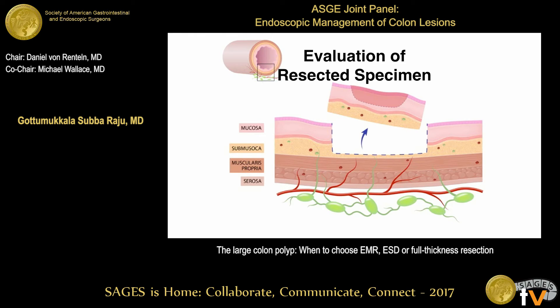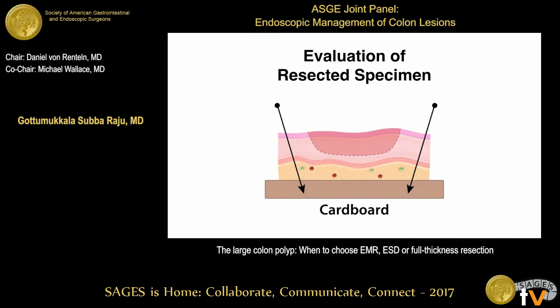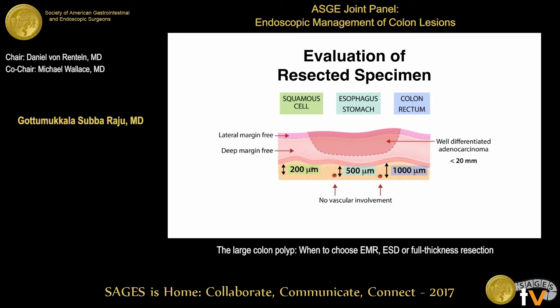As endoscopists in this country, we tend to throw the specimen into the formalin jar. But we should take time to pin the specimen to cardboard — that helps the pathologist look at the details and give a comprehensive report: whether it is a well-differentiated cancer, whether margins are negative, the depth of penetration, and whether lymphovascular invasion is present. A poorly differentiated cancer, presence of lymphovascular invasion, or margins positive or more than 1,000 micrometers — all those need to go for surgery for curative resection.